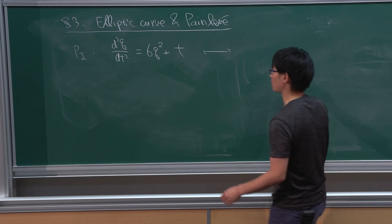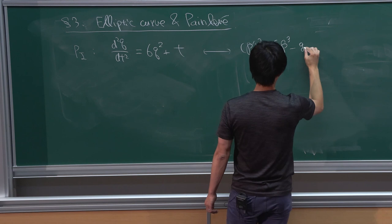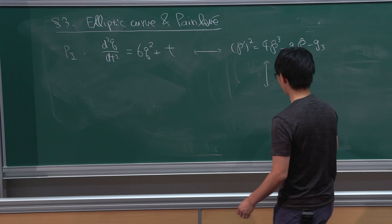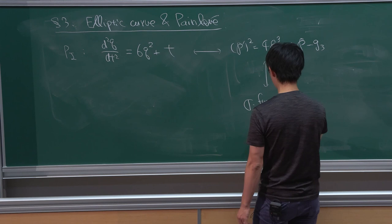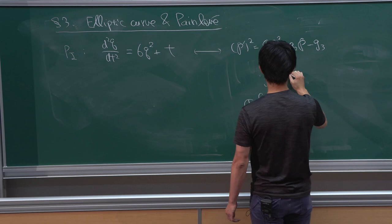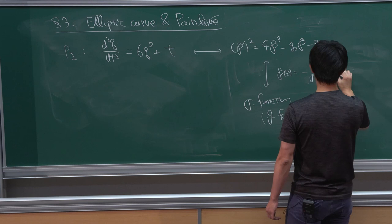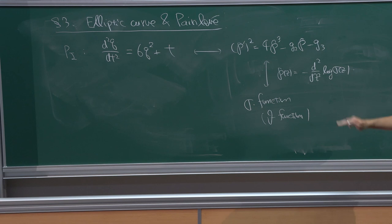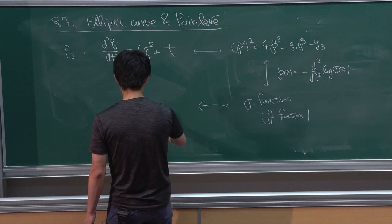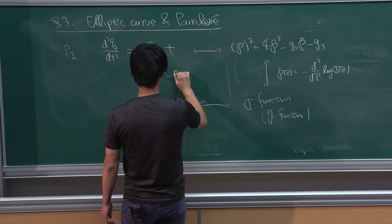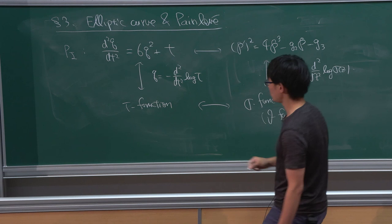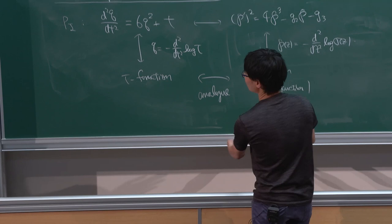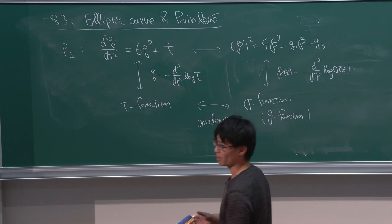The Painlevé equation was explained by Philip yesterday. I study mainly the first Painlevé equation. As explained yesterday, this is some deformation of the Weierstrass p-function. For the Weierstrass p-function there is a so-called sigma function, essentially a theta function by a certain relation. Our p-function must be obtained by the double logarithmic derivative of sigma. There is an analog in Painlevé theory called the tau function.